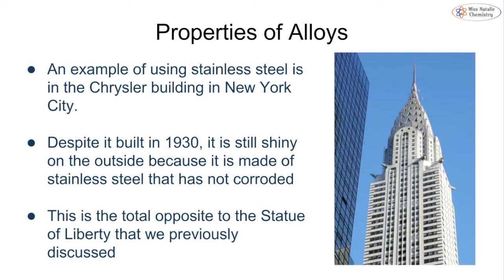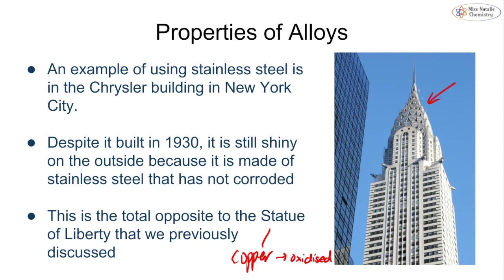An example of using stainless steel instead of pure iron is the Chrysler Building in New York City. Despite being built in 1930, it is still shiny on the outside — the exterior, particularly at the top, has a bright shiny colour because it's made of stainless steel, so it has not corroded and no rust forms. This is completely different from the Statue of Liberty, which is made of pure copper, was oxidised by reacting with oxygen, and turned that characteristic green colour. The stainless steel Chrysler Building is resistant to corrosion and stays shiny.